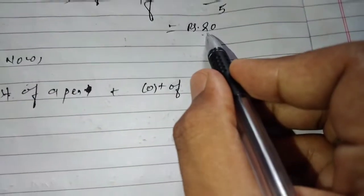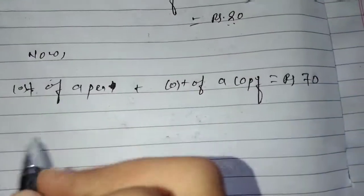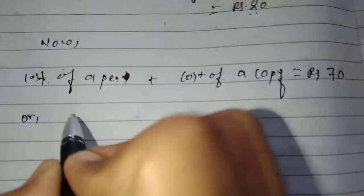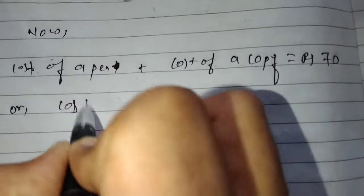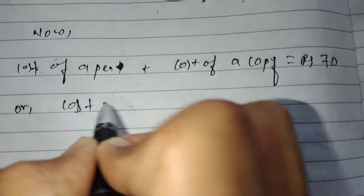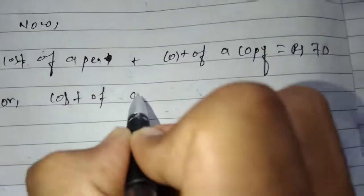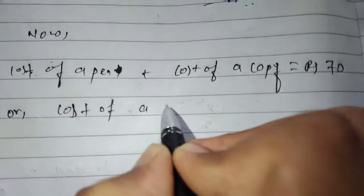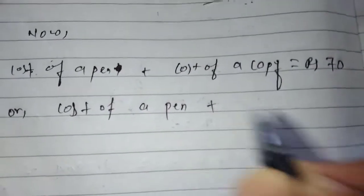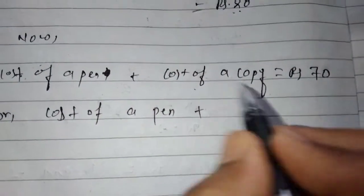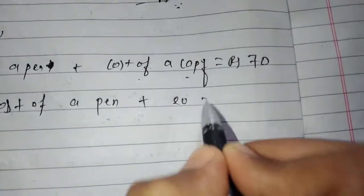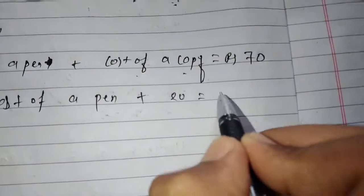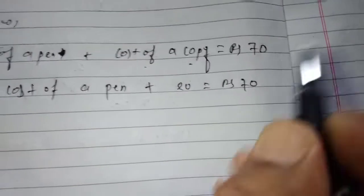We have the cost of one copy which is 20 rupees. So the cost of a pen plus the cost of a copy, which is 20 rupees, equals 70 rupees.